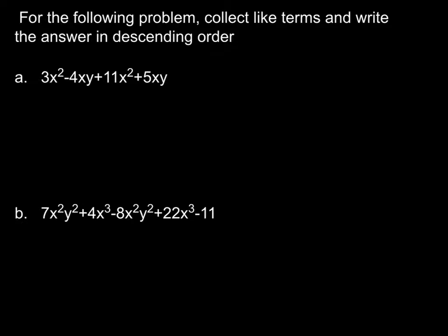In this problem it says for the following problem collect like terms and write the answer in descending order. So what we want to do here is in part A, these are two separate problems. In A we just want to take a look and we can only combine things if they have the same variables and the variables have the same exponents.